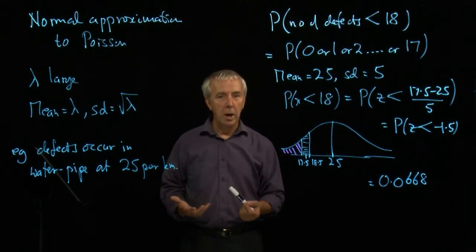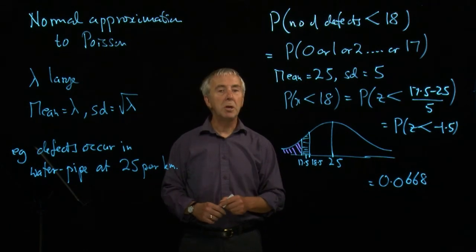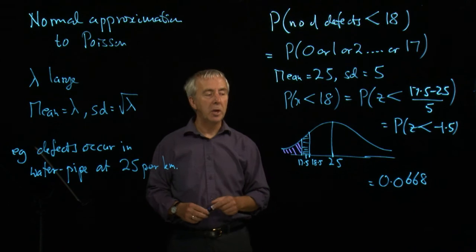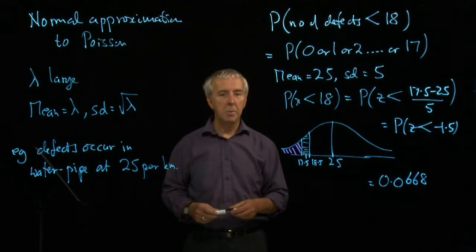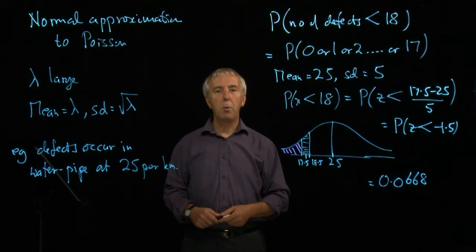And this works well. This gives us a good accurate answer as long as lambda is reasonably large. So in practice, anything much over 10 and you'll get reasonably accurate answers. So this is the normal approximation to the Poisson.